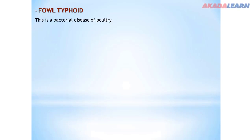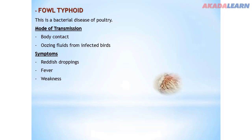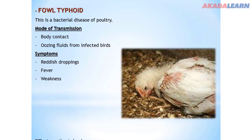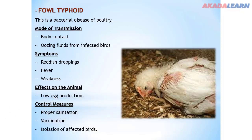The next bacterial disease is fowl typhoid. Fowl typhoid is a bacterial disease that affects mostly poultry — it affects birds. Mode of transmission: body contact and oozing fluids from infected animals. Symptoms: reddish droppings, fever, and weakness. Effects: low egg production in layers. Control measures: proper sanitation, vaccination, and isolation of infected birds.